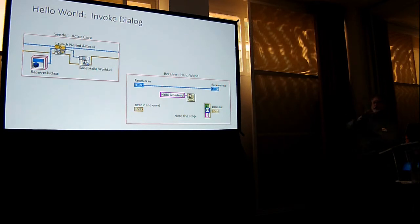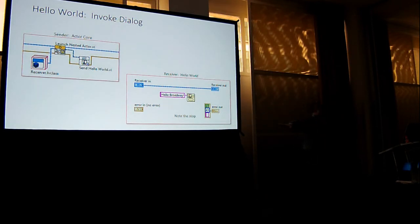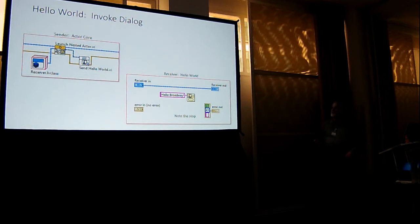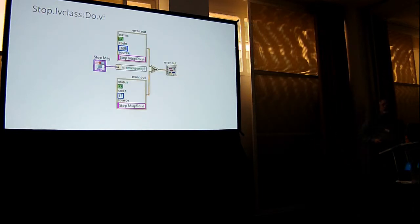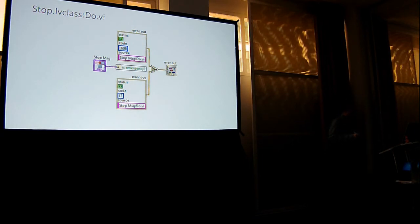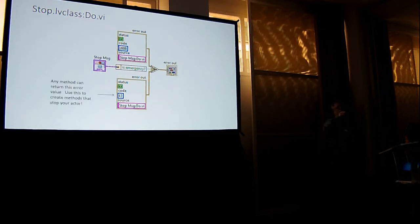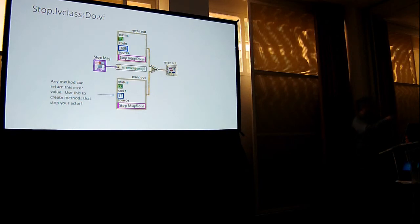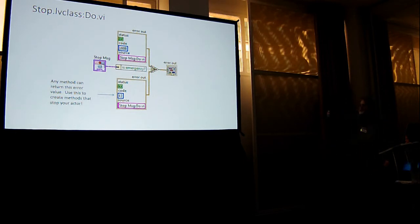I wanted the whole thing to stop as soon as the dialog cleared, and I did that with error 43. Has anybody looked inside the do.vi for the stop message? There's not a lot there — it doesn't invoke a method of the actor. It simply pushes an error code out onto the error wire, which you should probably think of as a stop wire with conditions of why you stop. If your method calculates that the actor should stop, you don't have to send yourself a message. Just push error 43.